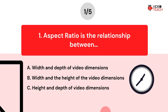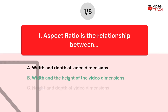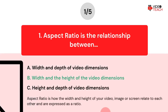Now you have about 15 seconds to think about your answer. The correct answer is Option B. Aspect ratio is how the width and height of your video, image or screen relate to each other and are expressed as a ratio.